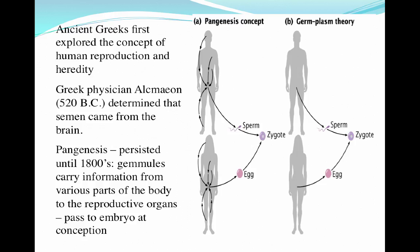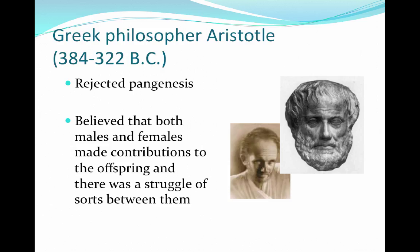Now we're going to quickly move through panogenesis and germplasm theory, which is really where the concept of reproduction took place and who contributed what factors. We know today that sperm comes from the male and the egg from the female, and they have their own genetic material to contribute to a fertilized zygote. However, one early theory was panogenesis — the idea that gemmules actually carry information from various parts of the body, such as the brain, heart, and feet, and that these gemmules came together in the form of sperm and egg, passed at conception.